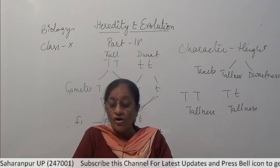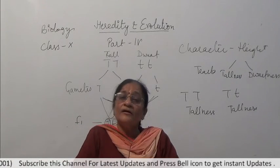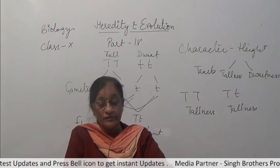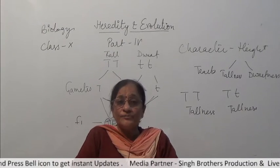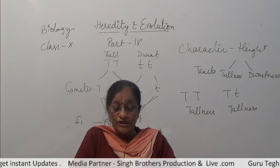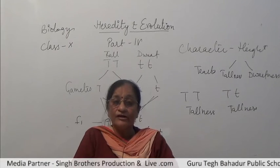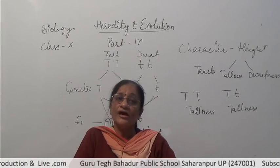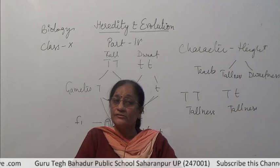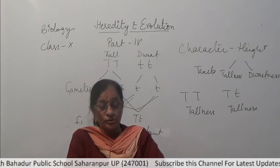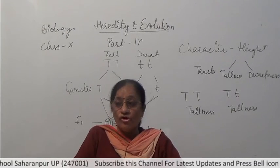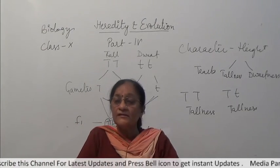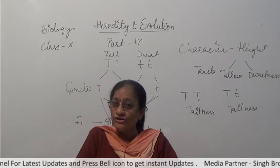The fourth rule is the principle of independent assortment, explained by the dihybrid cross. One of Mendel's dihybrid crosses was between round and yellow colored seeds and wrinkled and green colored seeds. In the F1 generation the hybrid produced had round and yellow colored seeds, which on self-pollination produced four types of plants in a ratio of 9:3:3:1, as discussed earlier.